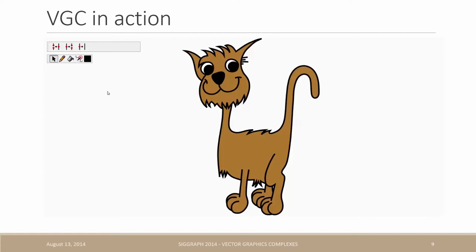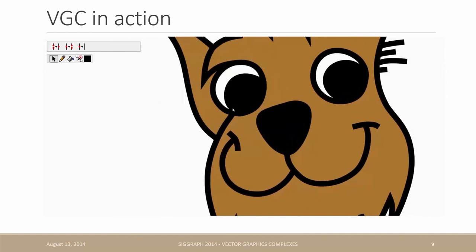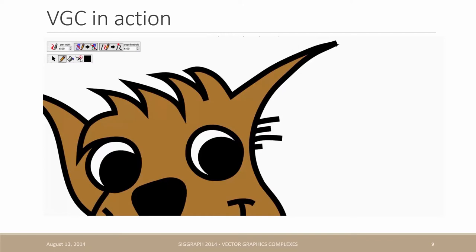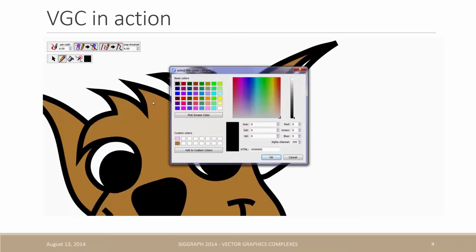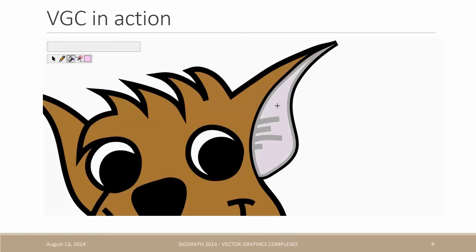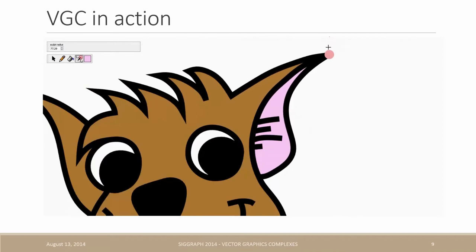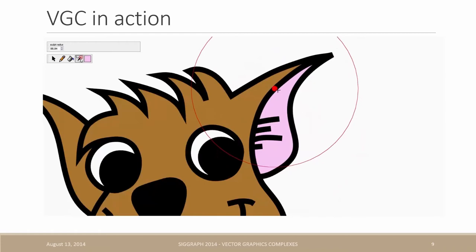We now show how this works in practice by completing the drawing of these cats. So first, I'm going to select the sketching tool and draw the outline of the ear. It automatically snaps to nearby edges. So now I select a pink color and with the paint bucket, I click to create a face. Since the topology of the ear is correctly represented, it can be easily edited, including three-way joints or shared edges.